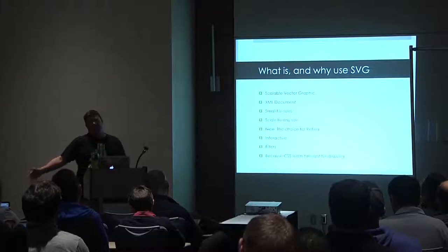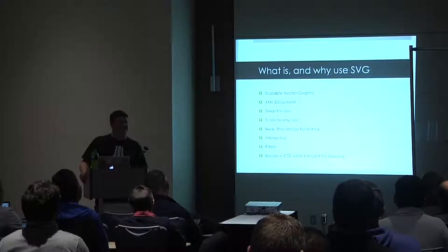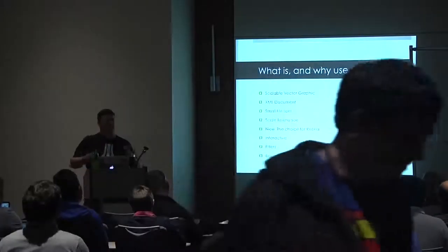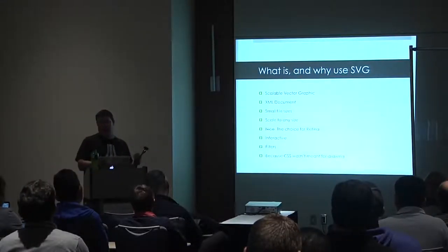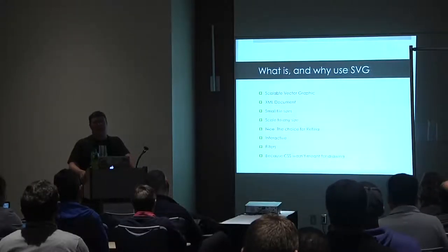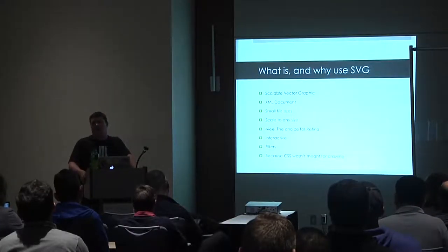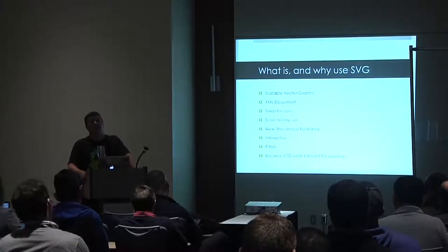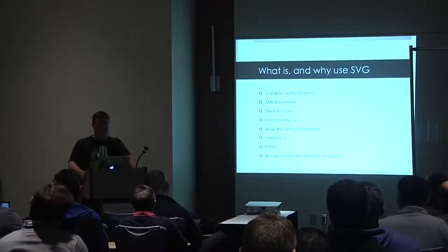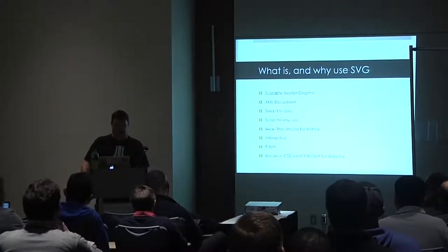Obviously, scalable vector graphic — it's not a raster, which means zoom in, zoom out, you don't get pixelation. This is killer for everybody who has to deal with retina displays. Stop trying to make a PNG for everything in every size. You can probably rock it with SVG. You also get super small file sizes. If you're going to have inline SVG and you're not creating it on the fly with JavaScript, you can get this stuff compressed pretty tight. It can be cacheable in certain instances. Scaled any size — if you're dealing with retina stuff, go ahead and just do this.